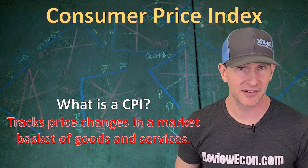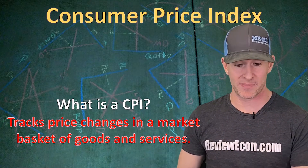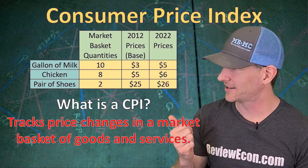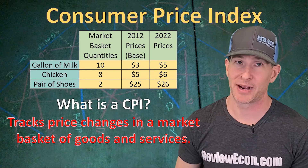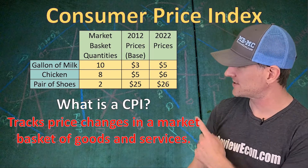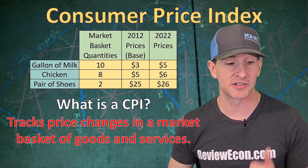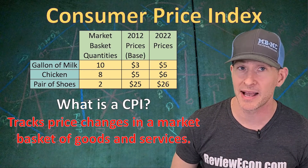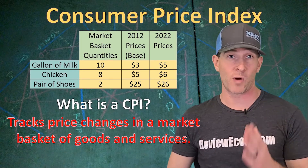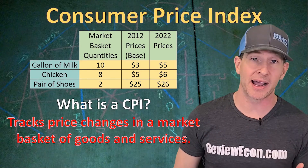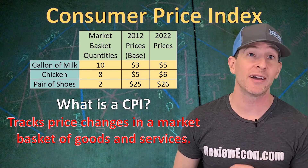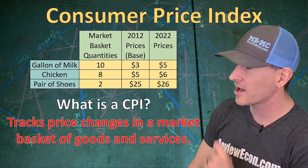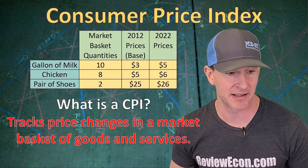To help us understand how to calculate a CPI, we're going to use a market basket comprised of just three items: a gallon of milk, a chicken, and a pair of shoes. We have different prices for those items in 2012 and 2020. Just like the real market basket, this market basket is weighted, meaning some items are more heavily counted than others based on the quantity within the market basket.